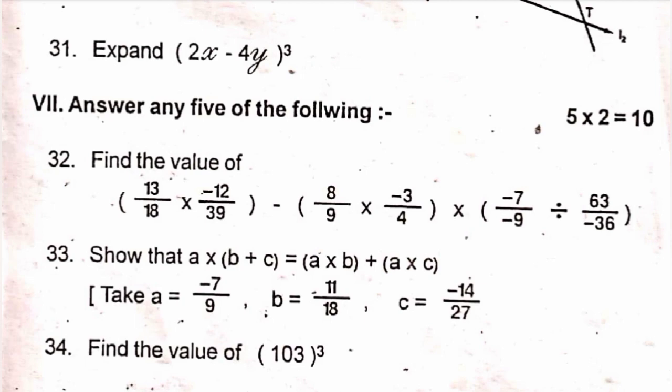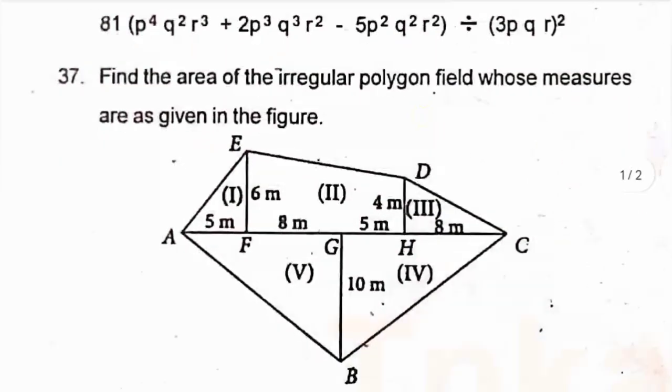37, find the area of irregular polygon field whose measures are as given in the figure. So, this is the area of irregular polygon field.